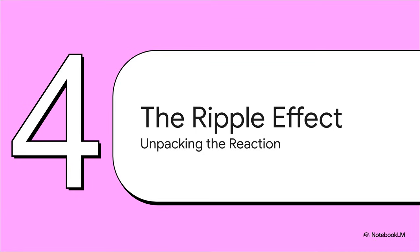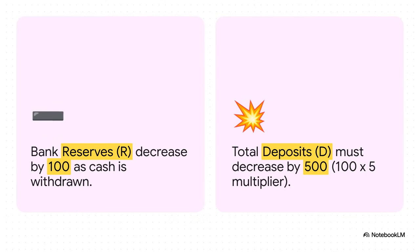This 20% ratio is the core of a system we call fractional reserve banking. Since banks only need to hold a fraction of deposits in reserve, it creates an incredible multiplier effect. A 20% ratio means every single dollar in reserves can actually support $5 in deposits. This 5x multiplier is the engine of the ripple effect we're about to witness. Remember that $100 withdrawal? It comes directly out of the bank's reserves. With that 5x money multiplier in effect, bank reserves fall by just 100 — but since every one of those reserve dollars was supporting $5 in deposits, the whole system is now out of balance. To get back in line with that 20% rule, total deposits must shrink by 5x that withdrawal — that's a 500 decrease.